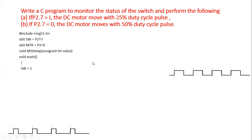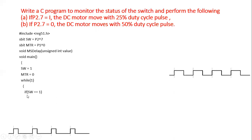In the main program, first we set the switch to one so it can receive inputs. Then we initially turn off the motor. Once the motor is off, we start our continuous operation. In the continuous loop, we monitor the condition of the switch — if the switch equals one, a 25% duty cycle should be produced.